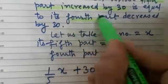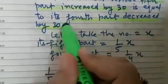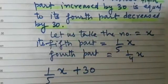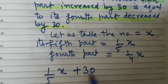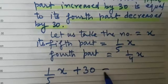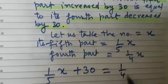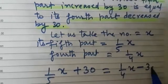it is saying fourth part decreased by 30. So what is the fourth part? That is 1 by 4x. So 1 by 5x plus 30 is equal to 1 by 4x minus 30.